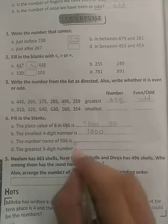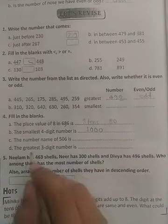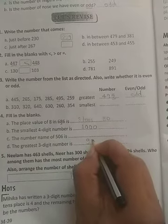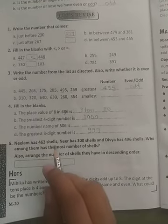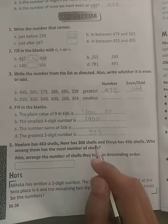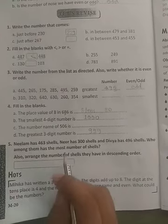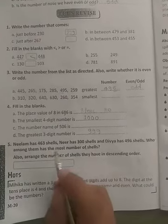Okay, now Neelam has 463 shells, Neer has 300 shells, and Divya has 496 shells. Who among them has the most, as the most number of shells? Now who is having the most? Most means highest: 463, 300, and 496. So 496 is highest, right?